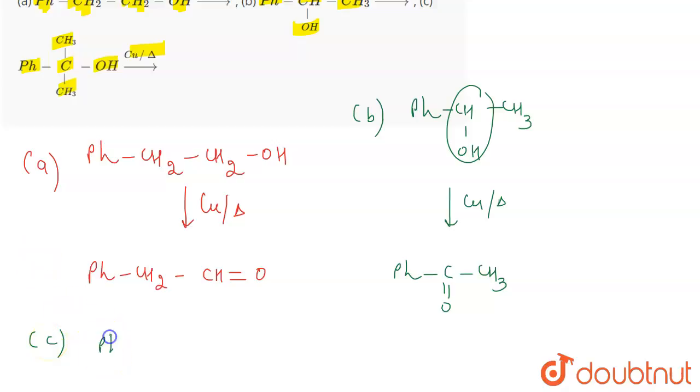If we talk about the C part, then here we have phenyl CH3-C-CH3-OH. And when this is heated in the presence of Cu, what is going to happen is an alkene is going to form.